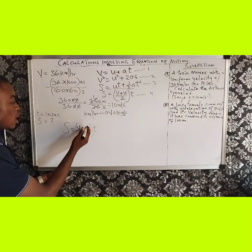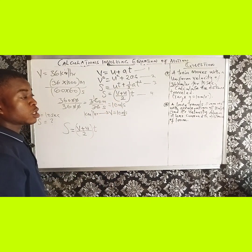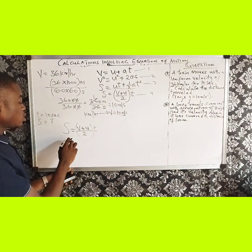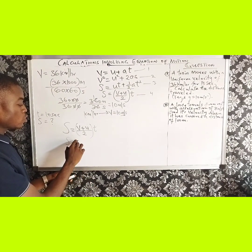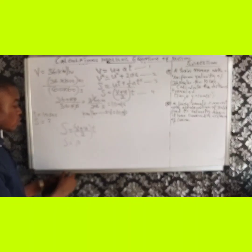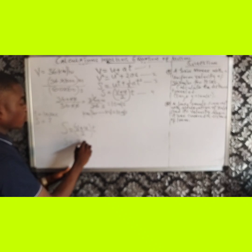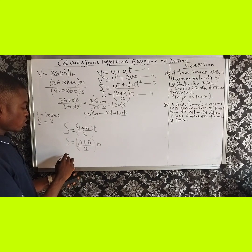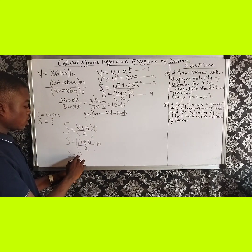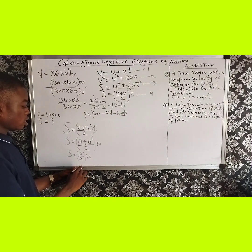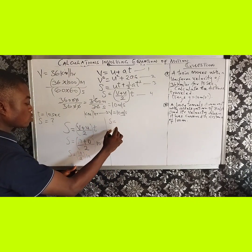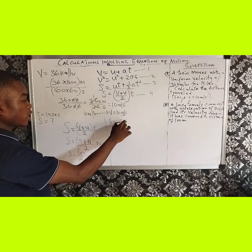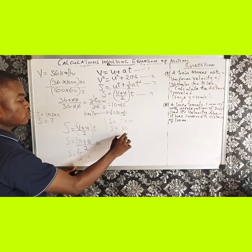So from the fourth equation, S equals V plus U divided by 2, multiplied by T. Here V is my velocity and U is my initial velocity. In the question, the initial velocity is 0 since the train starts from rest. So S equals 10 plus 0, divided by 2, multiplied by T which is 10. That gives S equals 10 divided by 2, which is 5, multiplied by 10, giving S equals 50 meters.